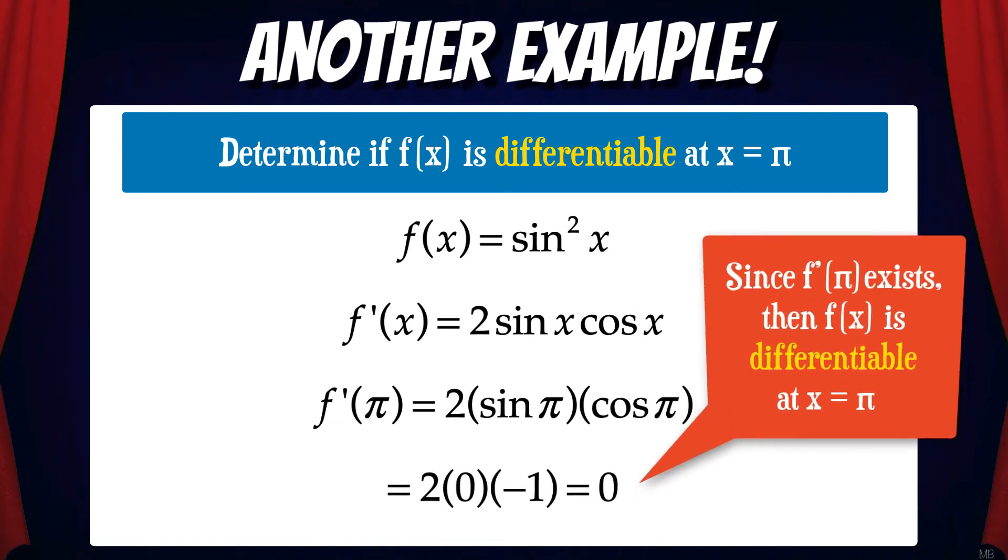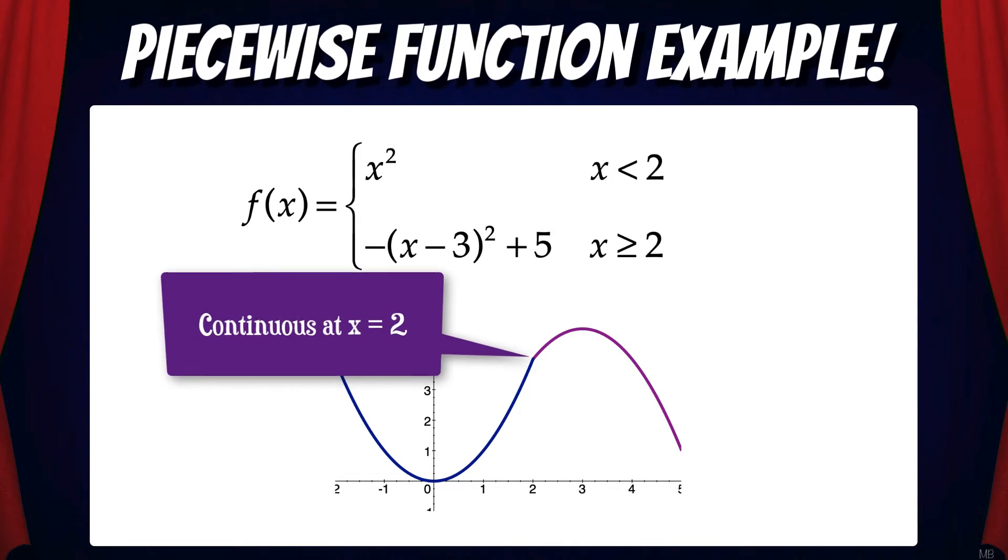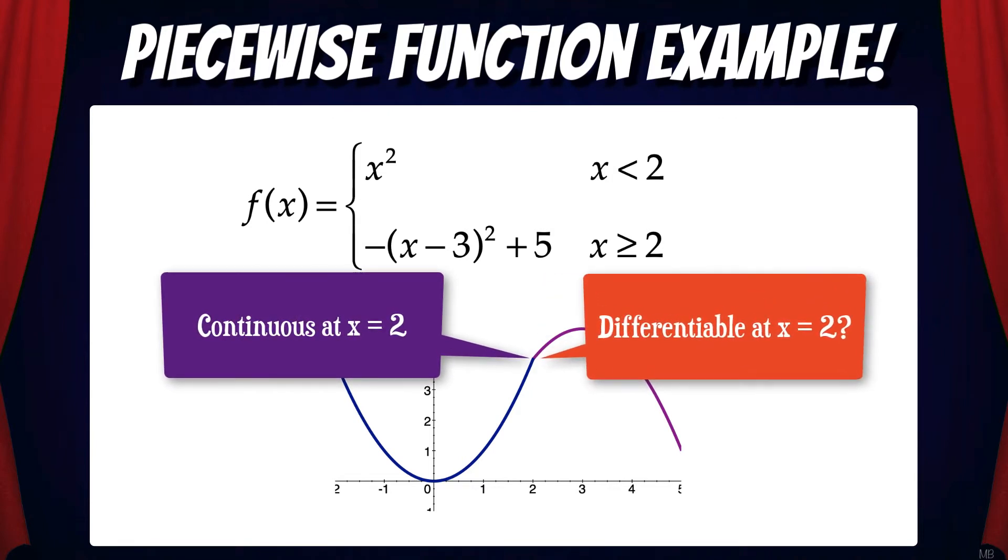So we can conclude that since f prime of pi exists, then f of x is differentiable at x equals pi. Now let's look at an example of a piecewise function. Here we have a piecewise function that is continuous at x equals two. But is it differentiable at x equals two? Let's find out.